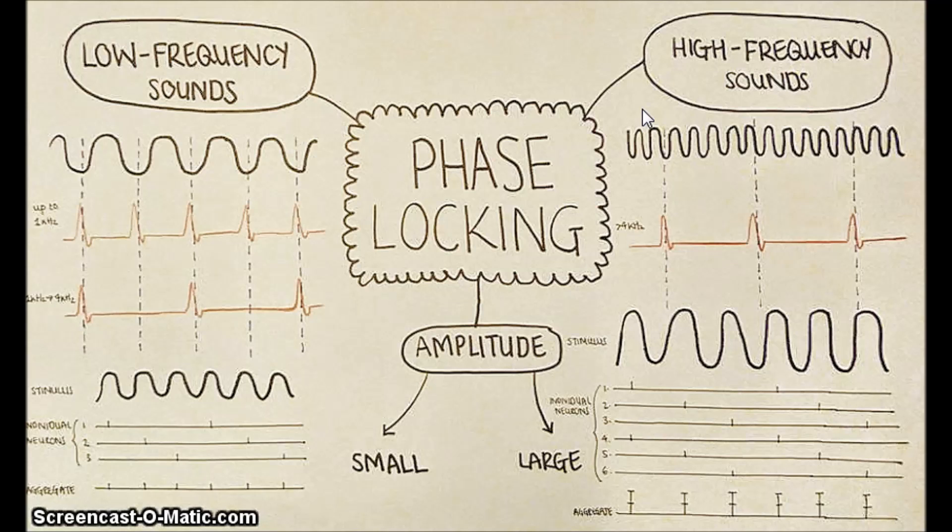This means that frequencies above 4 kHz are represented by tonotopy alone. This shows how phase locking is important in pitch perception. But it's important to remember that the intensity of the stimulus is encoded by the number of sensory fibers that are active, rather than the frequency of firing.